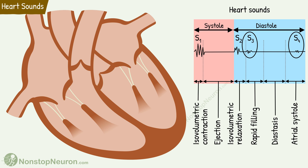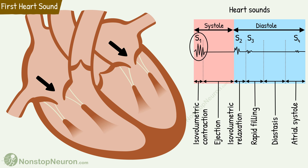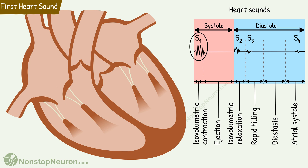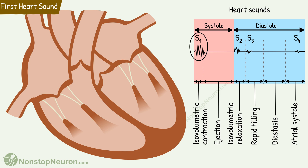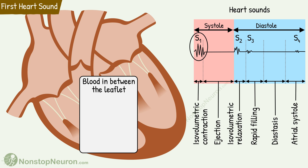Now let's see the detail of each heart sound one by one, starting with the first heart sound. We know that at the beginning of the systole, the atrioventricular valves close. The first heart sound is associated with that. Initially it was thought that the sound is produced due to slapping together of the leaflets of the valve. However, the fact is the blood in between the leaflets cushions the slapping, so actually little or no sound is produced due to the slapping effect.